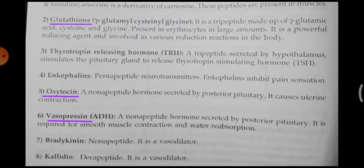Next is bradykinin, which is also a nonapeptide. It is a vasodilator and helps in the blood pressure maintaining function. Calidine is a decapeptide made up of 10 amino acids, and it is also a vasodilator.